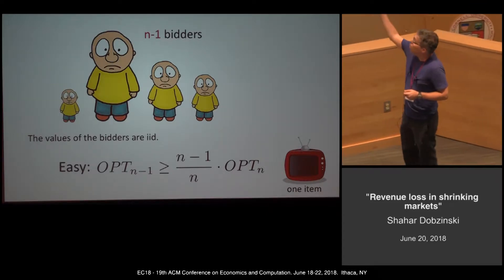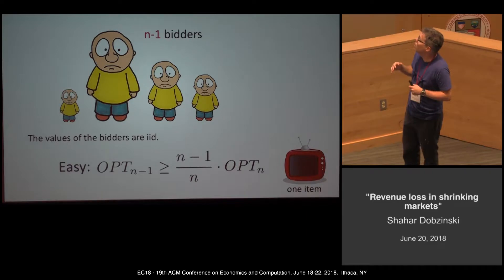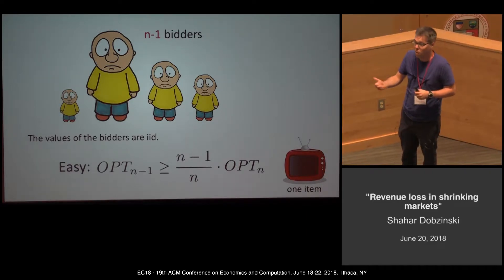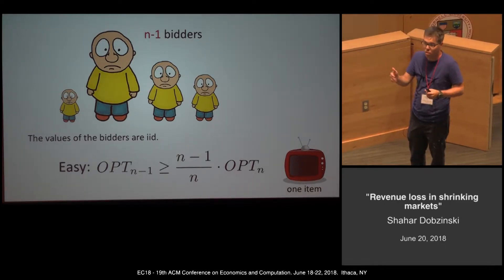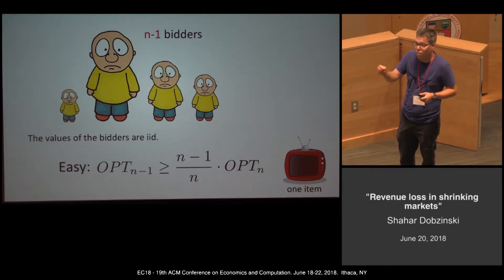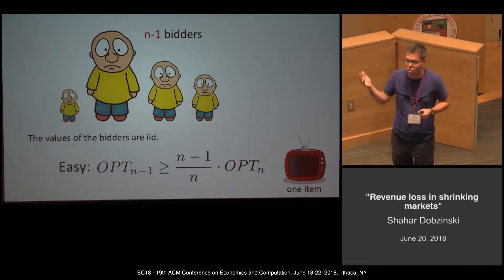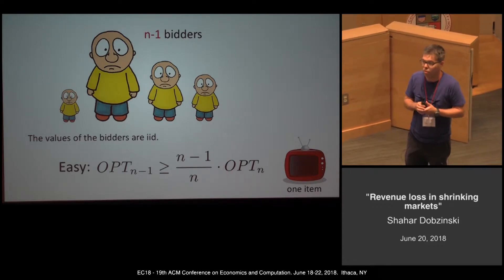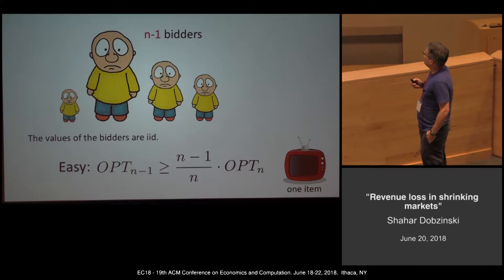The mechanism for the market with n-1 bidders is simply to take the optimal mechanism for n bidders, add one phantom bidder whose value is drawn from the same distribution as all the others, and do whatever the optimal mechanism for n bidders does. If it happens to sell to the extra phantom bidder, just don't sell the item at all. We lose only a 1/n fraction of the revenue.